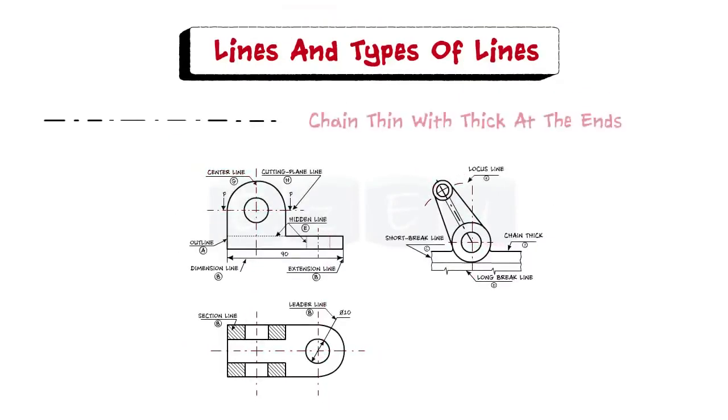Next is the chain thin line with thick at the ends. This line is used to represent the location of a cutting plane.